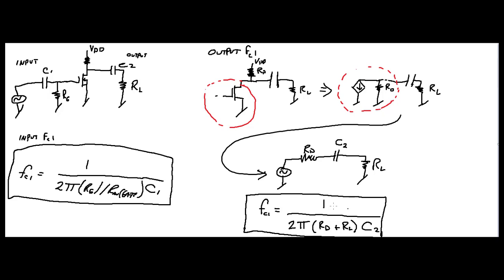So now you have two critical frequencies — one for your input and one for your output. This amplifier only has two RC circuits, so you're only going to have two critical frequencies.